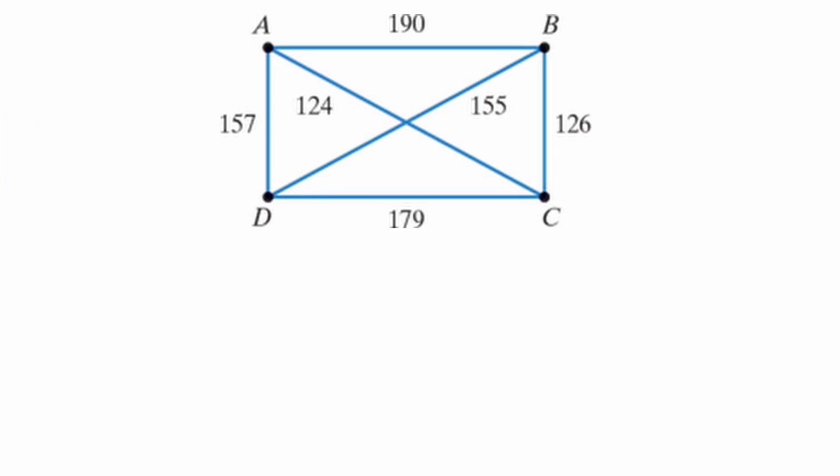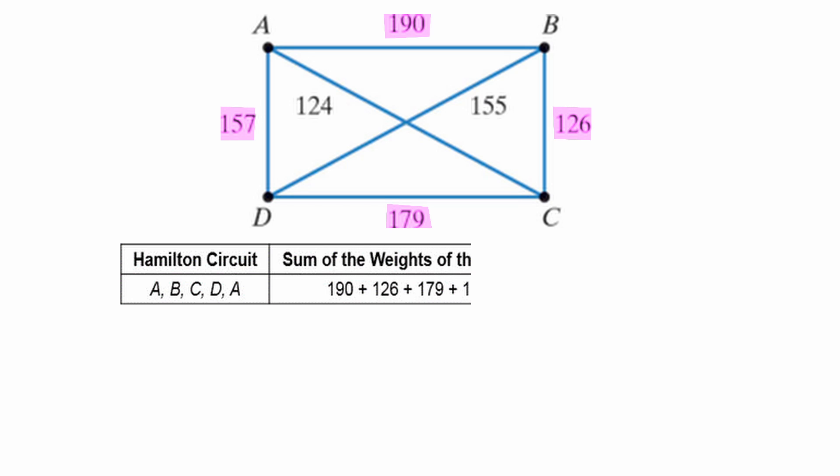They are going to follow those patterns we saw earlier. We have the ABCDA version, which has weights 190, 126, 179, and 157 for a total cost of $652.